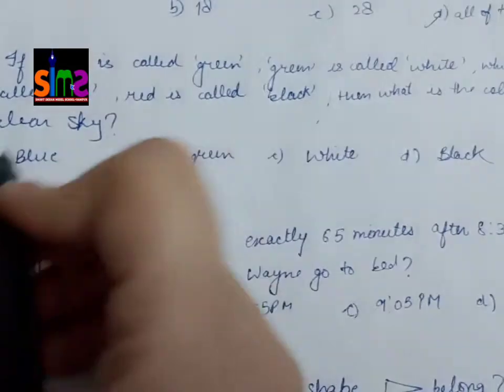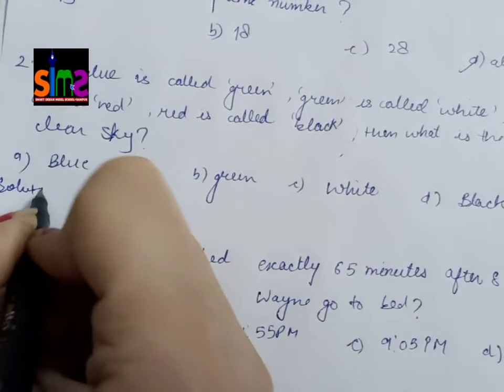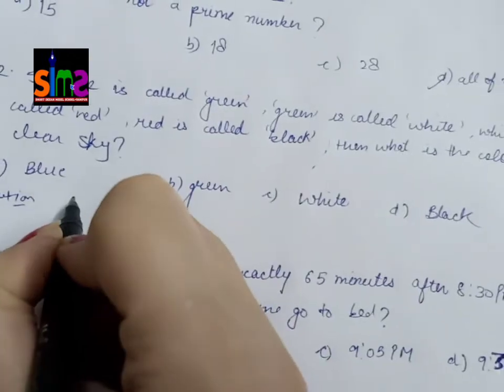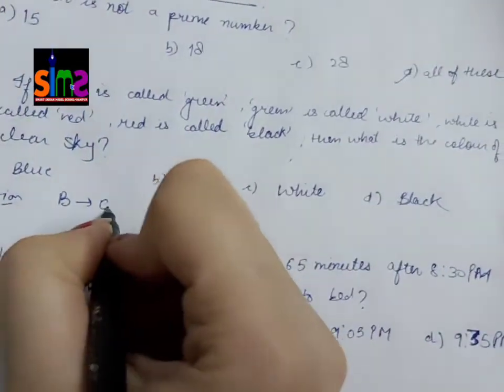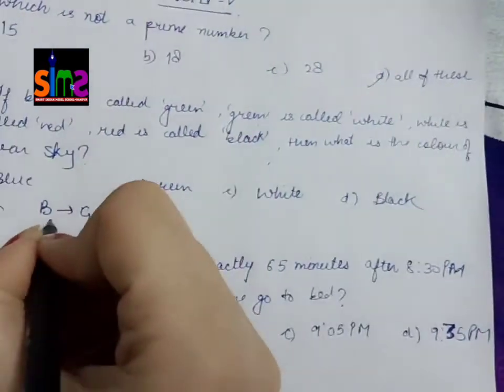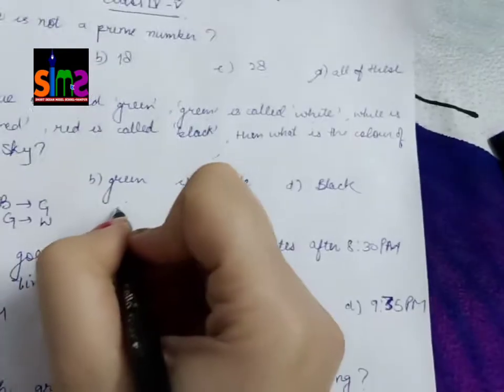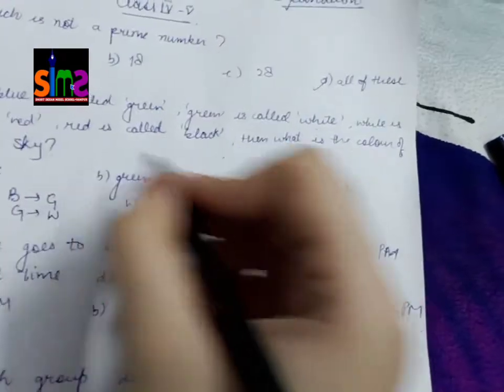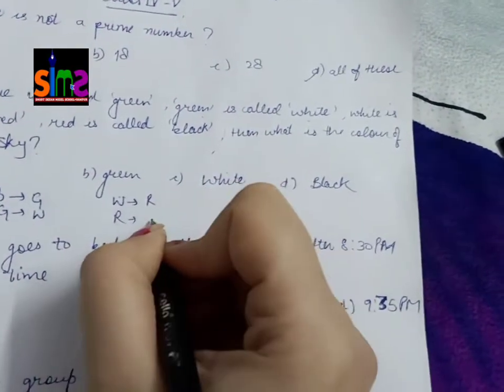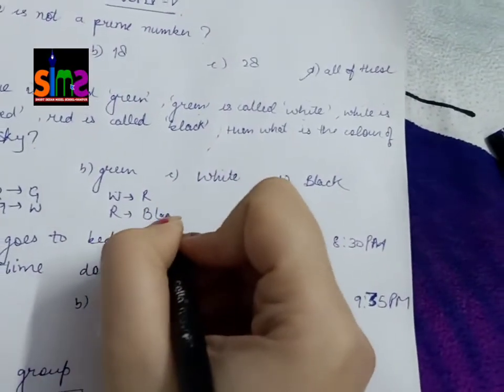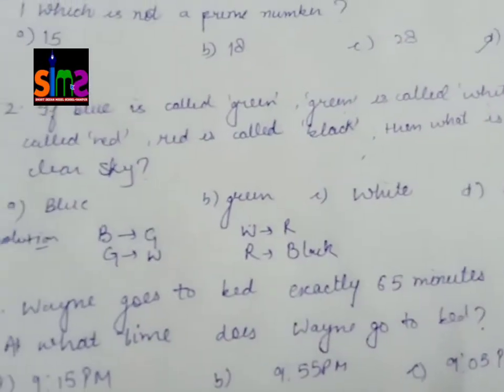Put it on rough paper. Note that if blue is called green, green is called white, white is called red, and red is called black. Now what is the question? Then what is the color of clear sky? You know clear sky color is blue.